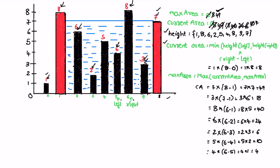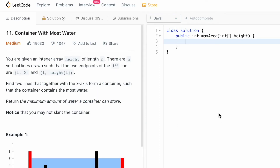We move the left pointer to the right because it is the minimum among both. Now left is pointing at index 6 and right is also pointing at index 6, so we stop the iteration because both pointers have met. We return whatever is stored inside max area, which will be our output. So 49 is our output for this question, and that is the expected output.